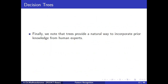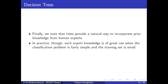Trees also provide a natural way to incorporate prior knowledge from human experts. In practice, such expert knowledge is useful when the classification problem is fairly simple and the training set is small. But if there are many classes, many features, and lots of data, it is better to do it automatically — learning from the data instead of giving human knowledge.